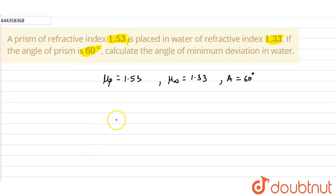The refractive index of prism with respect to water will be refractive index of prism divided by refractive index of water. So this will be equals to 1.53 divided by 1.33, so this will come out as 1.15.